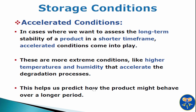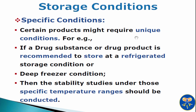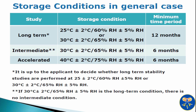Accelerated conditions help us to predict how the product might behave over a longer period. Certain products might require unique conditions. For example, if a drug substance or drug product is recommended to store at refrigerated storage condition or deep freezer condition, then stability studies under those specific temperature ranges should be conducted. In general case, long term stability studies are conducted at 25°C ±2°C temperature and relative humidity 60% RH ±5% RH or 30°C ±2°C temperature and relative humidity of 65% RH ±5% RH.